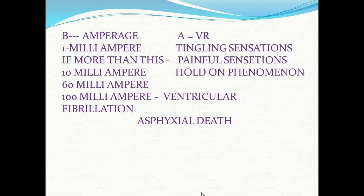The second factor is amperage — the strength of the current. Amperage equals voltage divided by resistance; resistance is measured in ohms. If 1 mA current enters the body, there are only mild tingling sensations. If more current enters, there are painful sensations. If 10 mA to 60 mA enters the body, there is the hold-on phenomenon. If 100 mA current enters the body, it is very fatal — it can lead to ventricular fibrillation, asphyxia, and death.